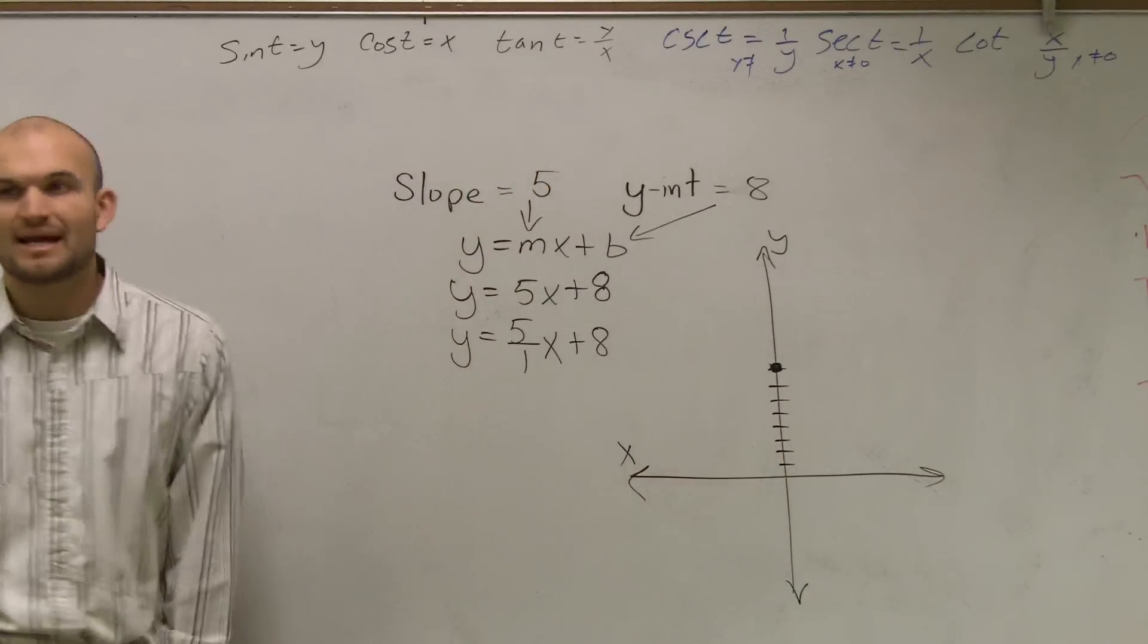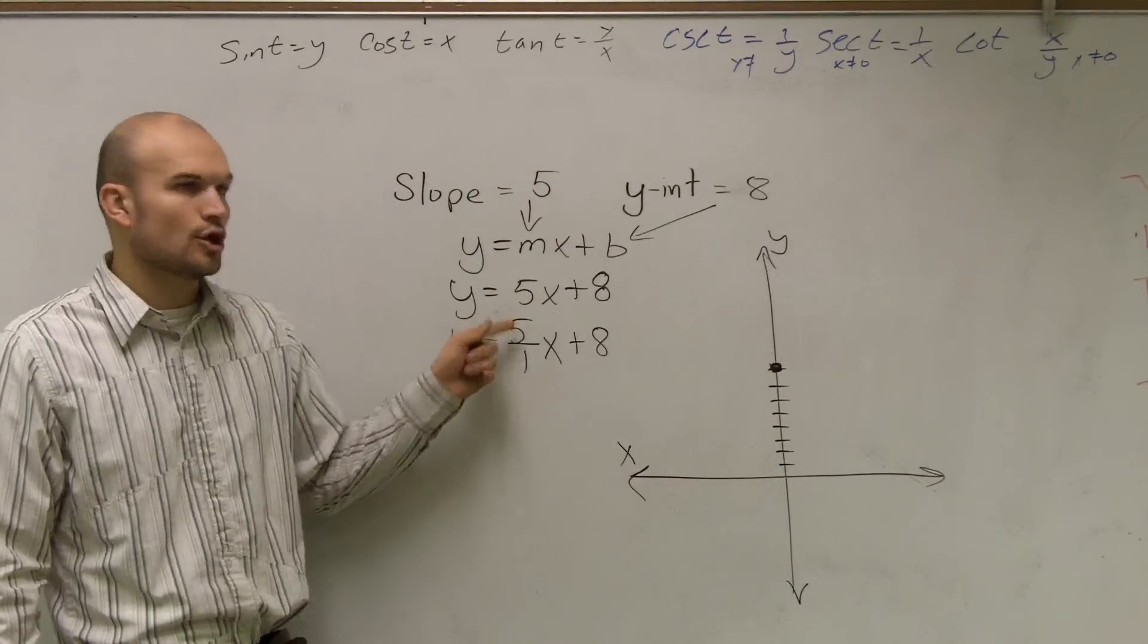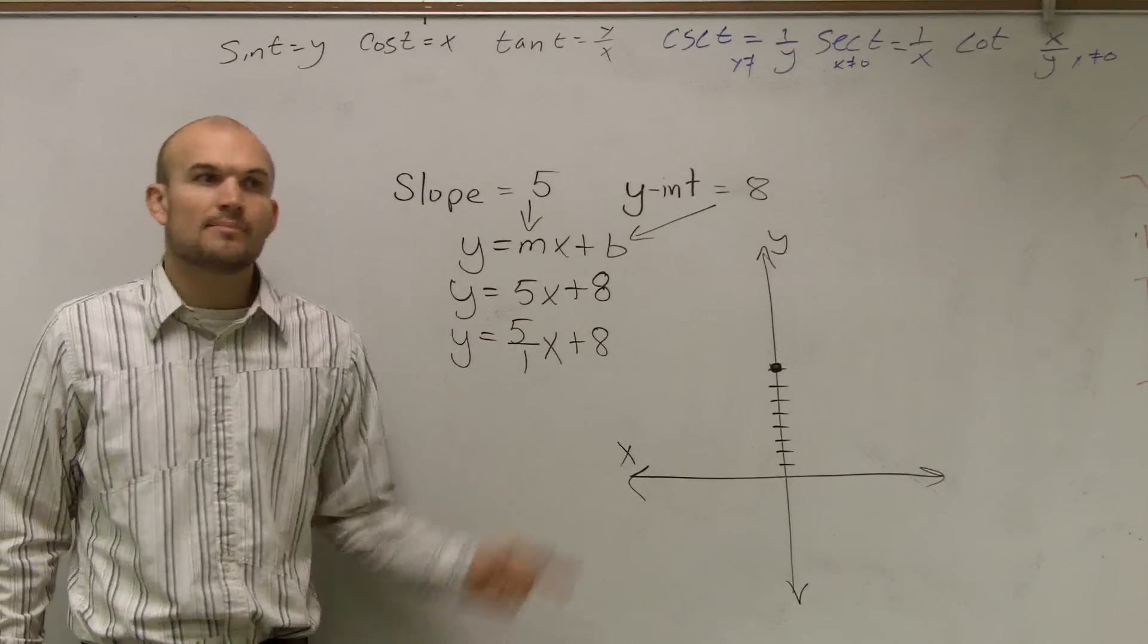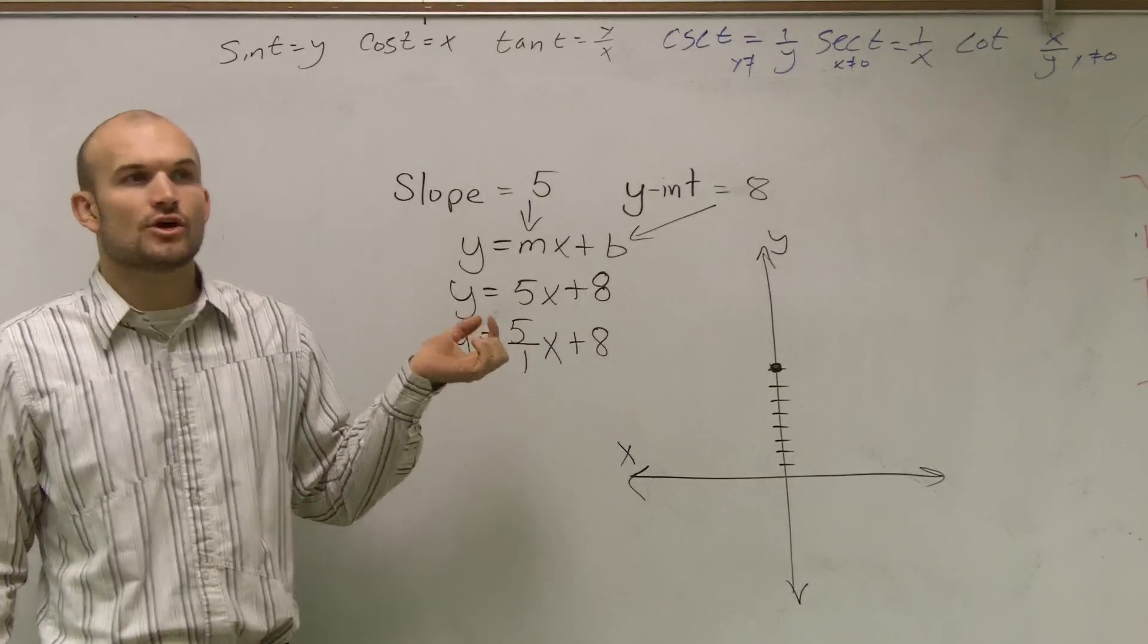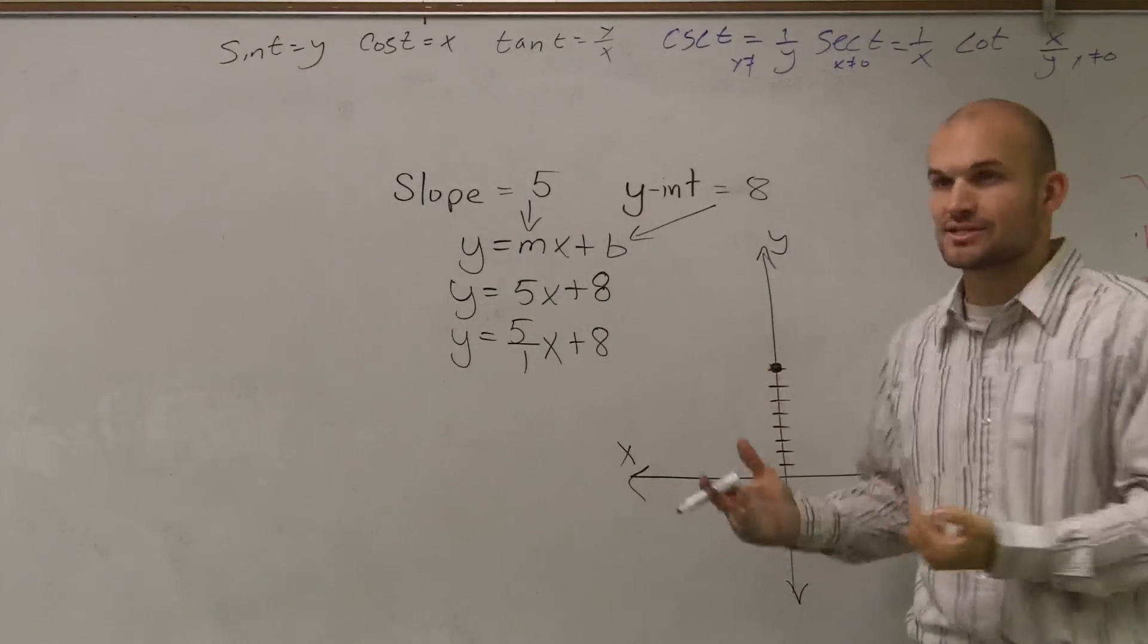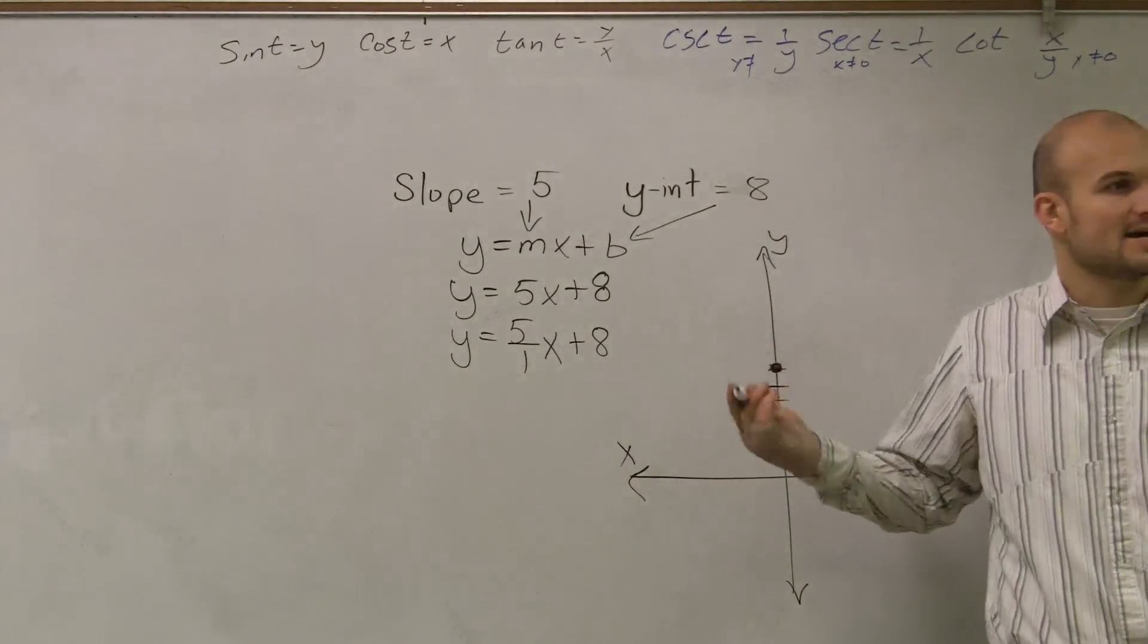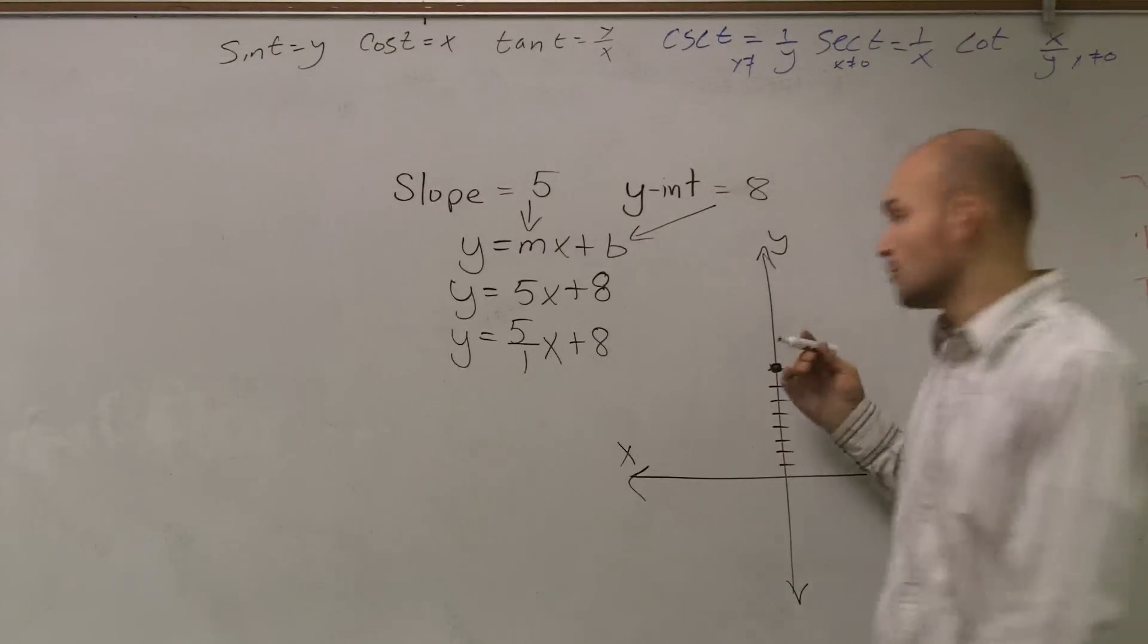I can make a nice big dot. Now, the next thing is the slope is 5 over 1. Remember, 5 is your change in your y-coordinates, and 1 is the change in your x-coordinates. So if my y-coordinates are changing a positive 5, that tells me I have to go up 5 more units.